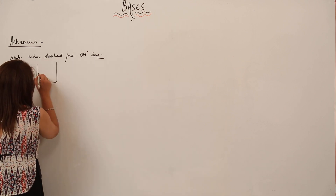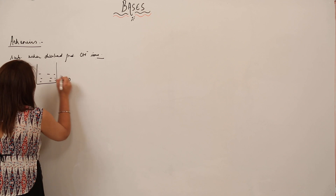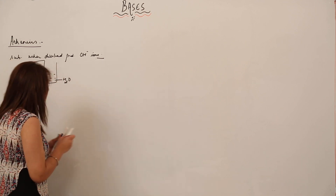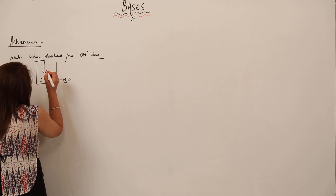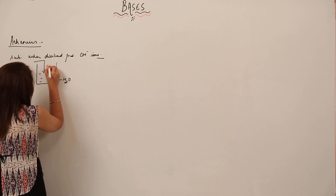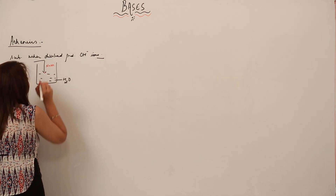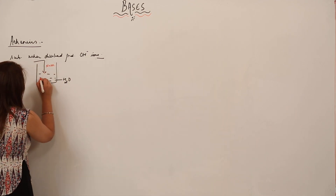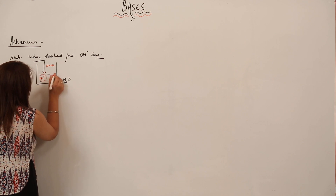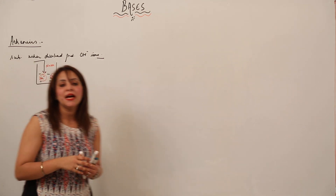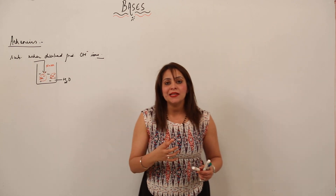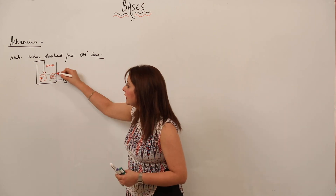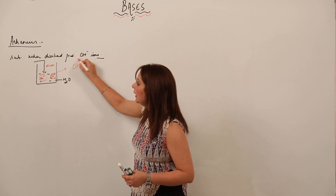Suppose I have a beaker with water and I'm adding sodium hydroxide to it. When sodium hydroxide is dissolved in water, it dissociates to form Na⁺ and OH⁻. So what Arrhenius says is that any substance which when dissolved in water produces hydroxide ions is called a base.